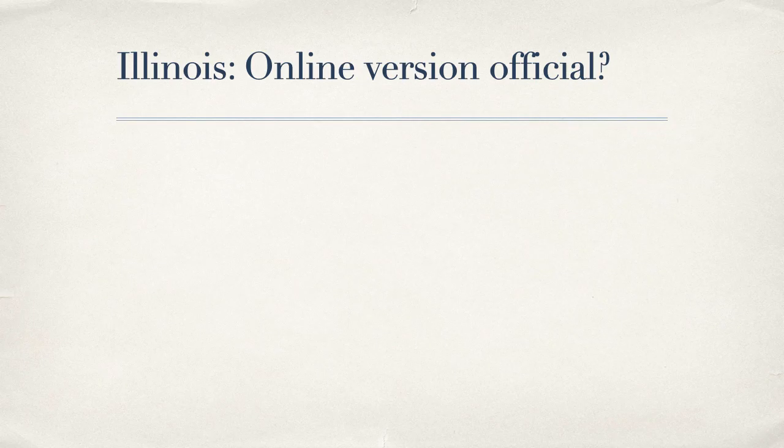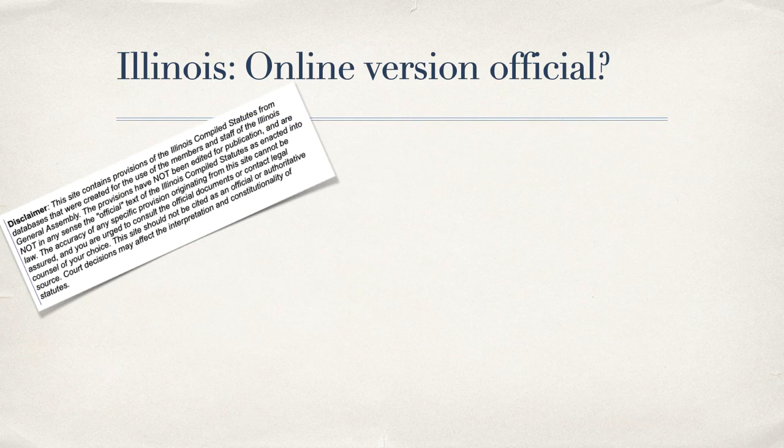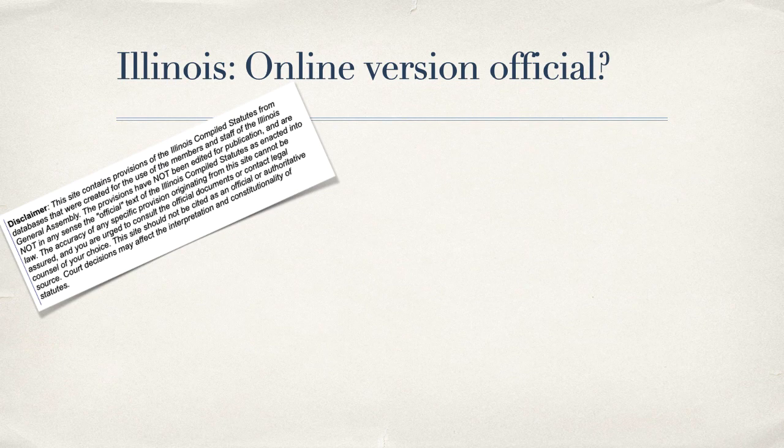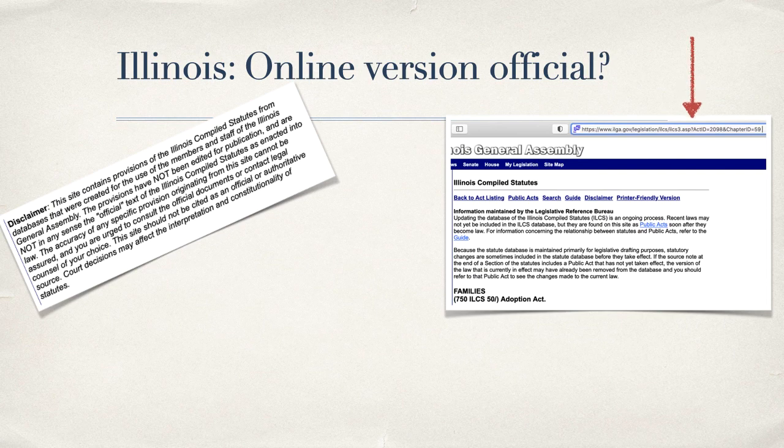While the Illinois General Assembly does have the code online on its website, it also contains this disclaimer. The disclaimer tells us that it is not official, and we cannot treat it as such. It doesn't mean that we can't use it for our cites, but if we do use it, we need to append the web address to our cite.